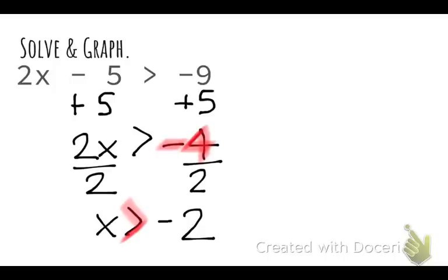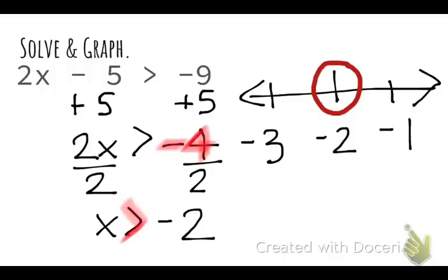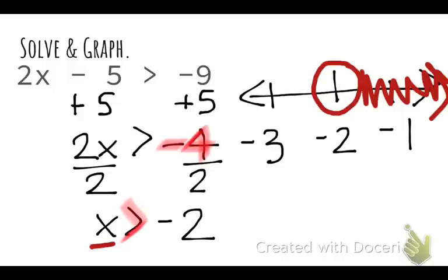To finish solving this inequality I need to graph it on a number line. I'll put negative 2 in the middle, with negative 3 to the left and negative 1 to the right. Since we have 'is greater than,' that's an open circle at negative 2. With the variable on the left, values greater than negative 2 are found to the right. So negative 2 is not a solution, but any number greater than negative 2 will work in this inequality.